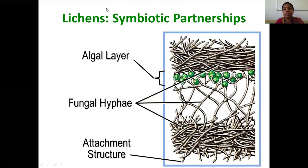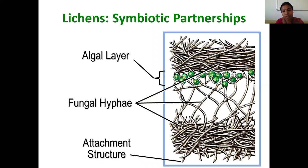The lichen has three layers: the upper layer is the upper cortex, the lower layer is the lower cortex — both made up of profusely branched fungal hyphae — and in between is a region called the medulla, where the algal partner is being trapped by the fungal hyphae.